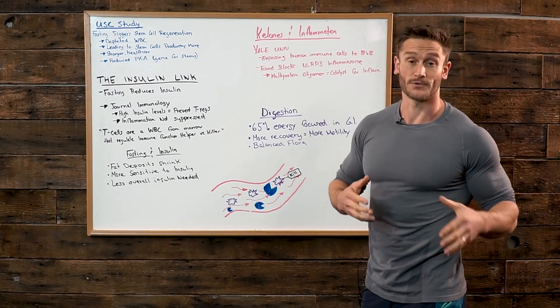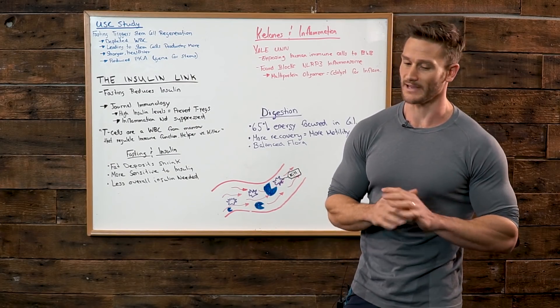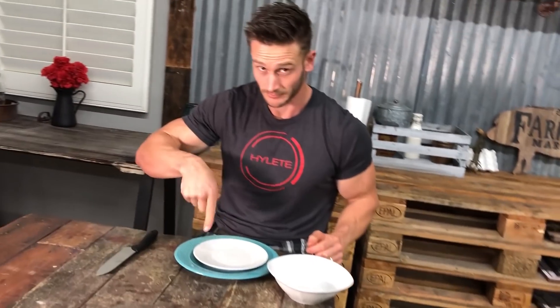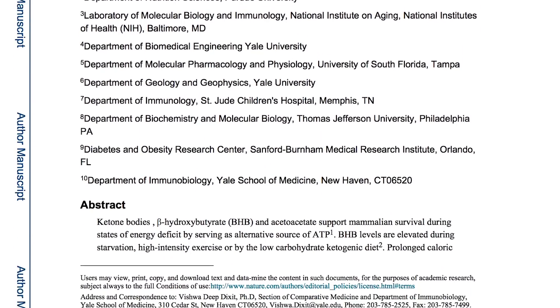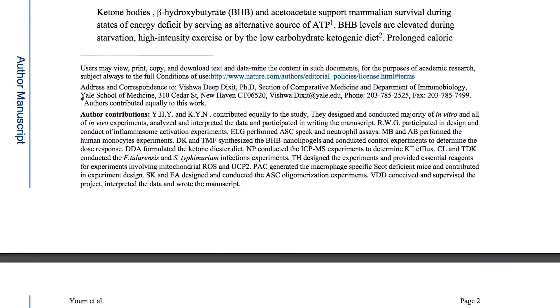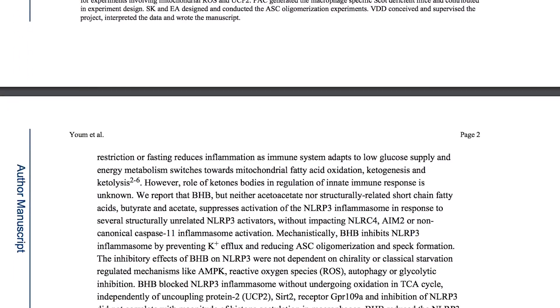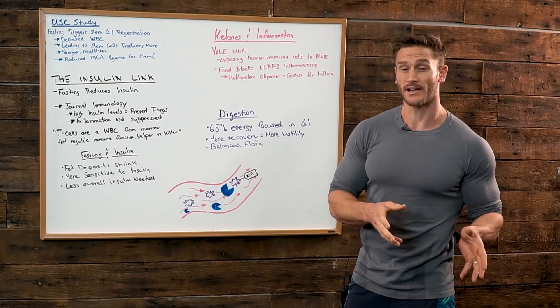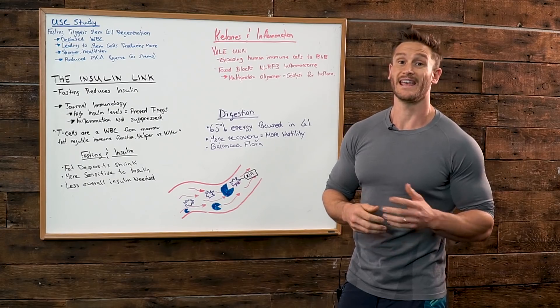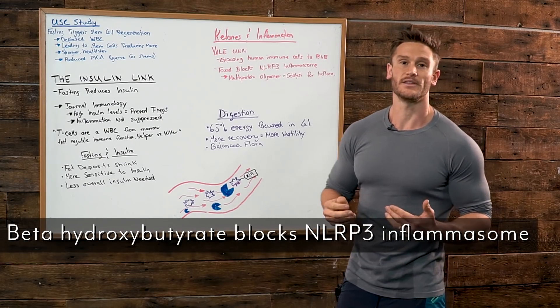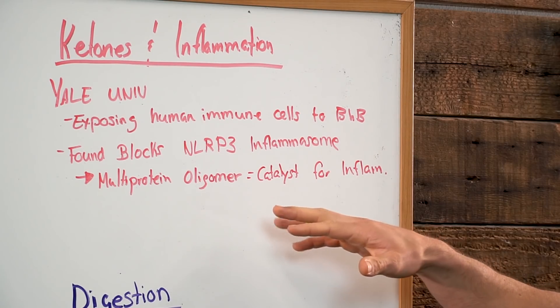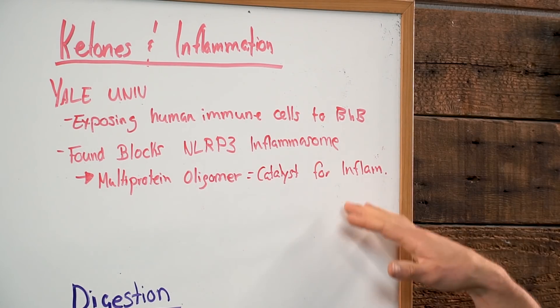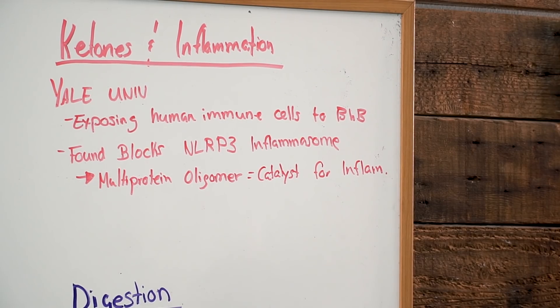Alright then we get over to ketones and inflammation. When you're fasting you are producing ketone bodies plain and simple. Yale University did a study specifically looking at ketones and beta-hydroxybutyrate. They exposed human immune cells to beta-hydroxybutyrate and found there was a huge suppression in inflammation. The way this beta-hydroxybutyrate had an effect on the immune cells was by working against what's called the NLRP3 inflammasome. This NLRP3 inflammasome is a multi-protein oligomer that allows your body to trigger inflammation. So when we reduce that NLRP3 we are getting rid of that catalyst for inflammation. Therefore the body doesn't produce as much inflammation and you end up having a happier situation and a better immune system.